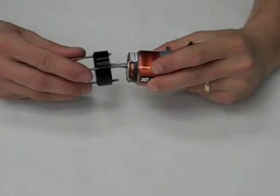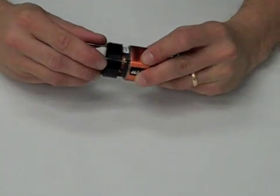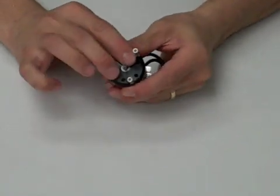Now, reinstall the front end bell. Grasp the end bell by the screws, slowly slide it onto the motor, and click the end bell into place.